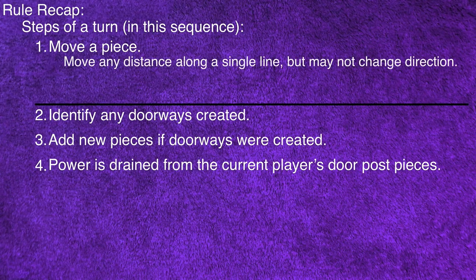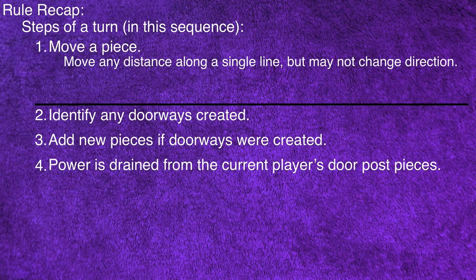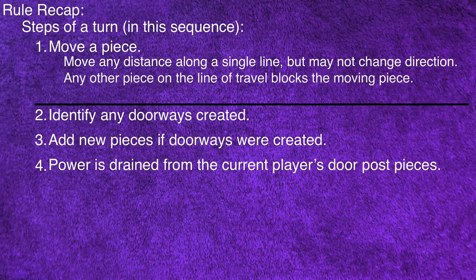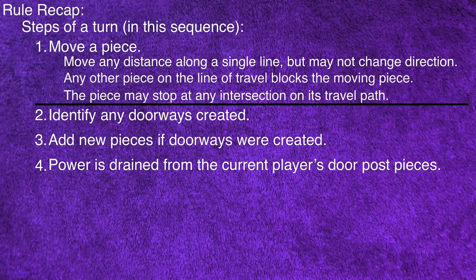When moving a piece, the piece may move any distance along a single straight line, but may not change direction while it is moving. Any other piece on the line of travel blocks the moving piece. The piece may stop at any intersection on its travel path.